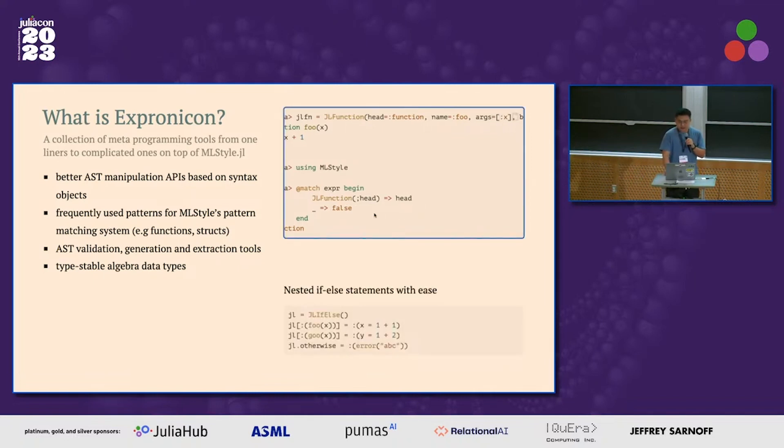And these are combined with ML style pattern matchers. The other example is you can easily generate nested AFL statements just using this dictionary interface. While in the normal Julia expression API, you have to do this recursively. We also provide some other tools I will talk in the following, that is the AST validation generation and extraction tools, and also type stable algebraic data type as a very experimental feature.